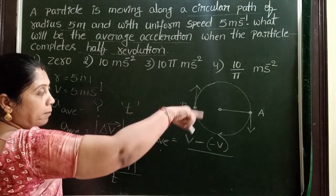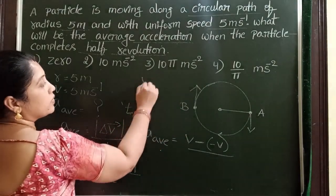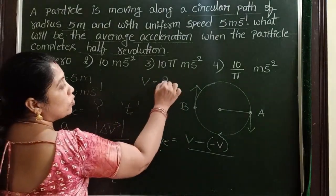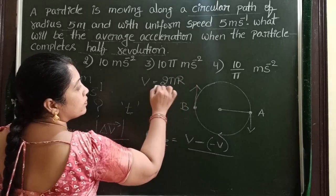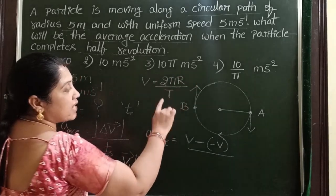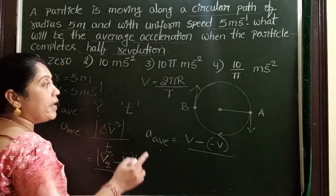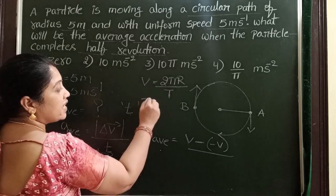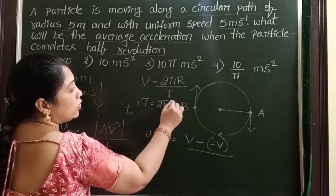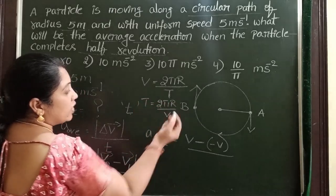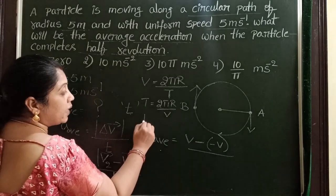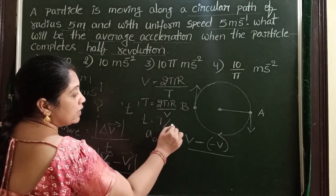To complete one revolution, speed is equal to 2πr by T, when T is the time taken to complete one revolution. From this, T is equal to 2πr by V. For half of the revolution, time T is equal to T by 2.